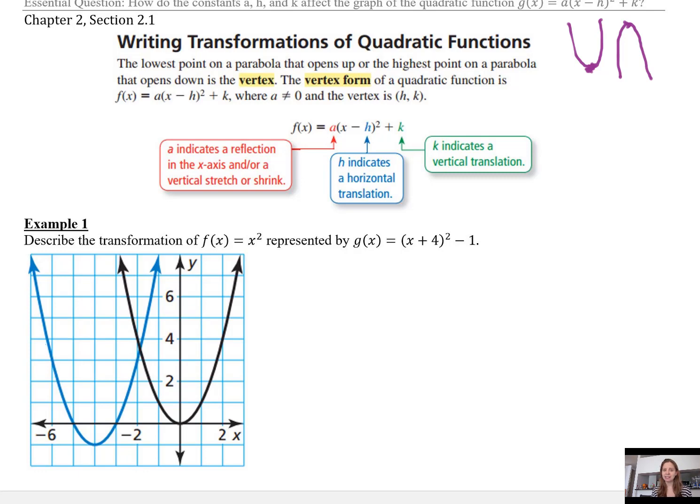a indicates a reflection in the x-axis and/or a vertical stretch or shrink. A reflection would mean that the a value is negative. A vertical stretch would be if the a value is greater than 1, and a vertical shrink would be if a is between 0 and 1. h indicates a horizontal translation, and k indicates a vertical translation.